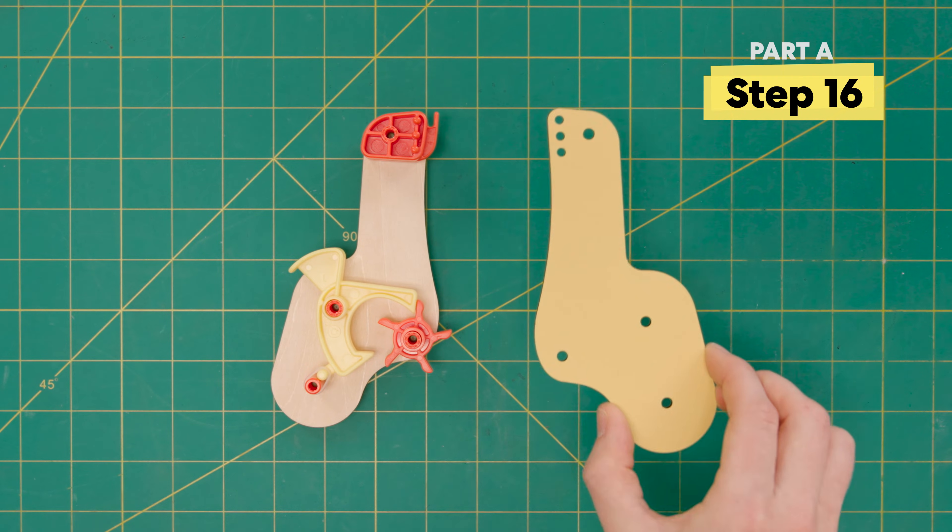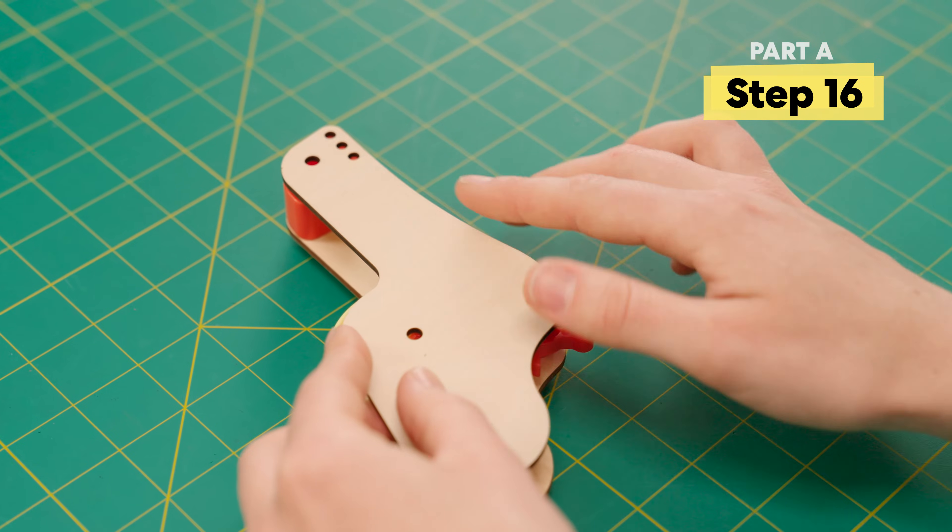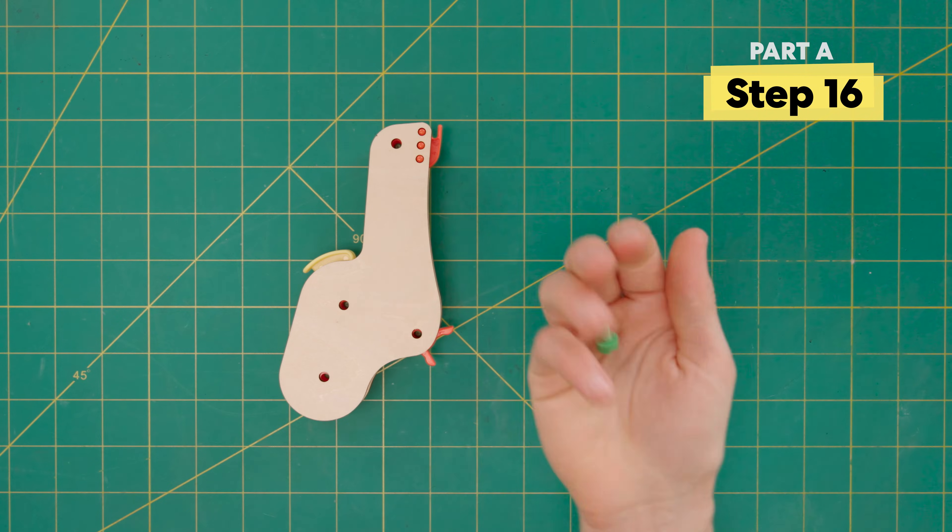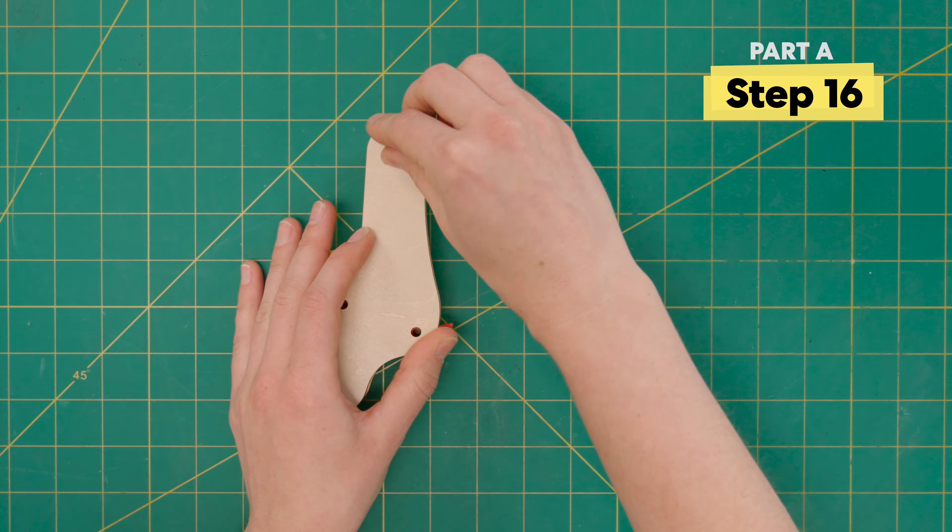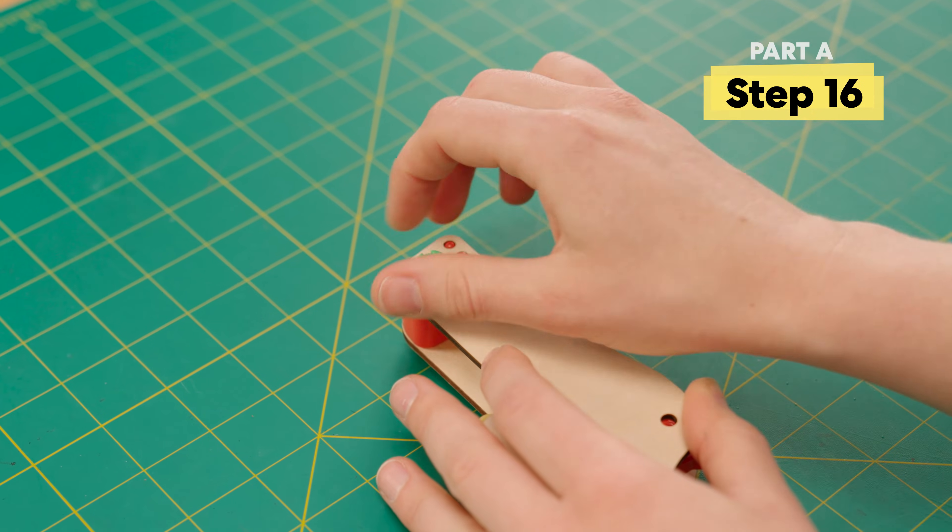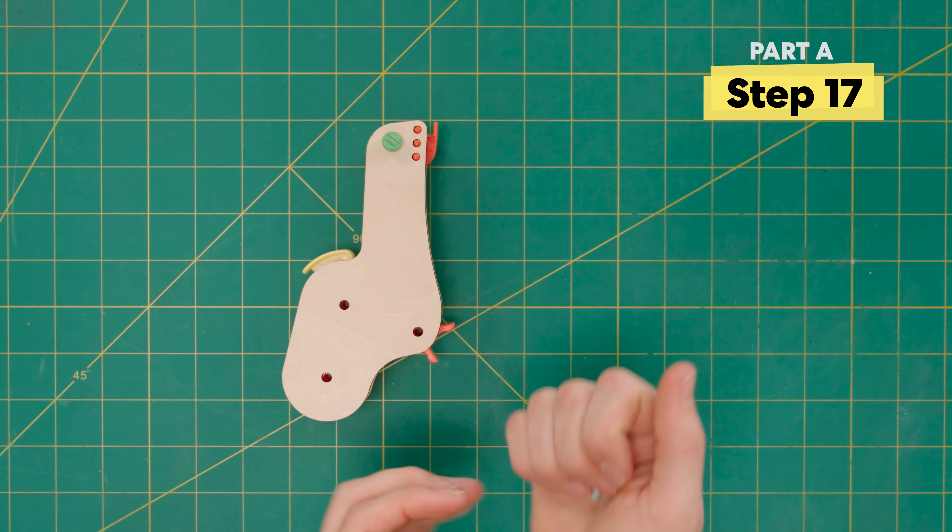Then, grab this yellow piece of wood and flip it over to sandwich everything inside. Secure it down with the green bolt up here and use three blue bolts to secure the rest of it.